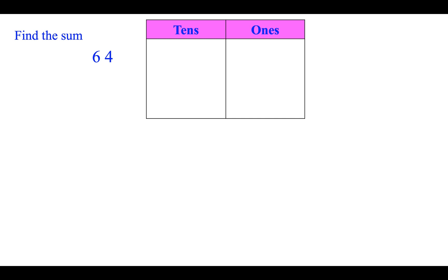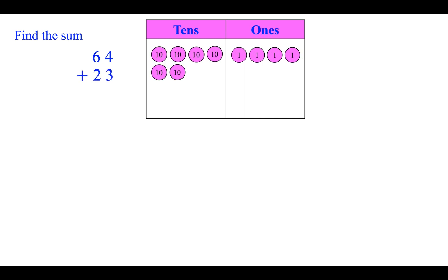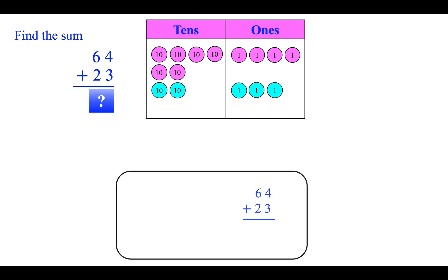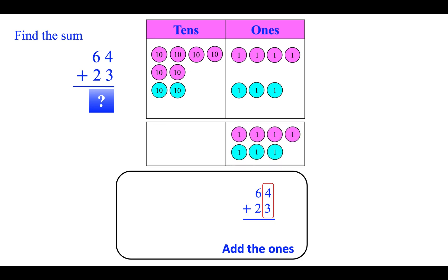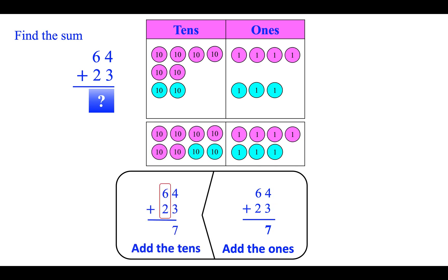Find the sum. Sixty-four plus twenty-three. First, add the ones: four plus three is seven. Then add the tens: six plus two is eight. The answer is eighty-seven.